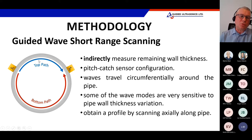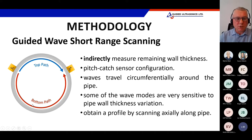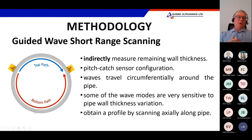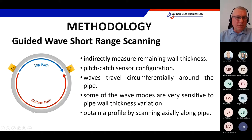One wave travels clockwise and the other anticlockwise. By sending these waves traveling around the circumference of the pipe from a remote position, we are able to measure the minimum wall thickness at the point of six o'clock — the contact point under the pipe support. At first look this seems pretty challenging, but we'll see how it's all being solved.